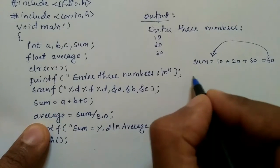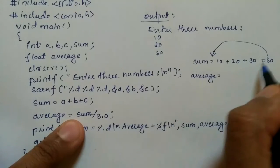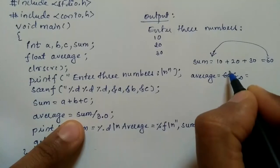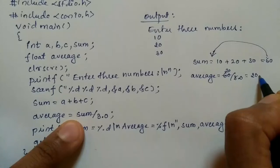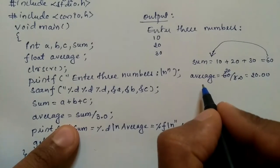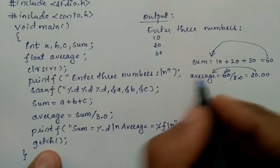Now it is going to execute the next statement: average = sum, which is 60, divided by 3.0. So 3 twenties are 60, so here it is going to give us 20.00. So this value is going to be stored in a variable called average.